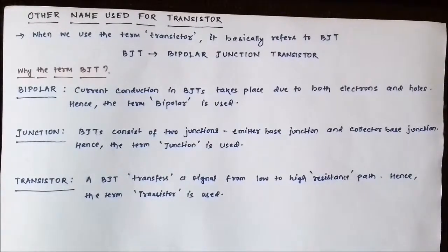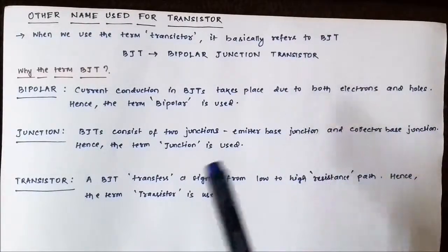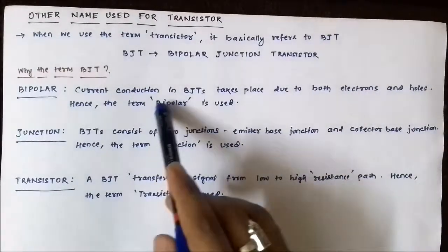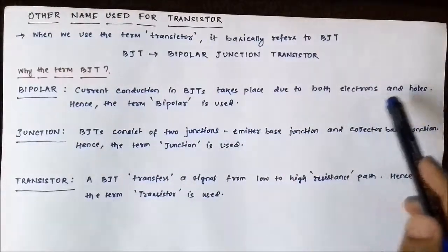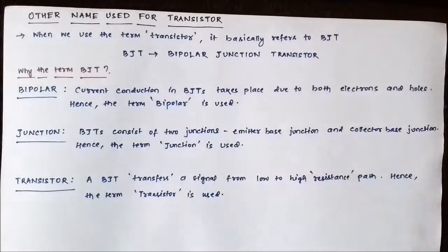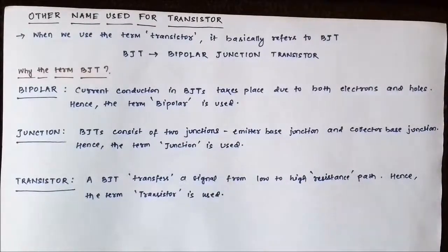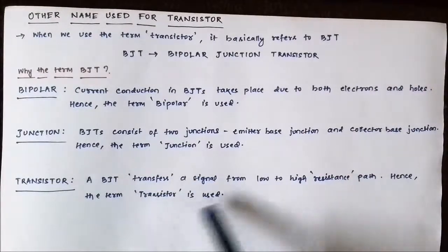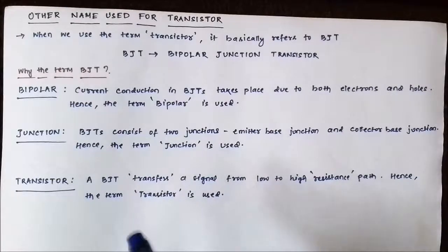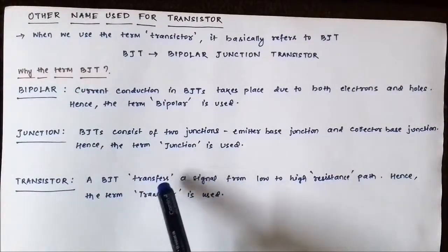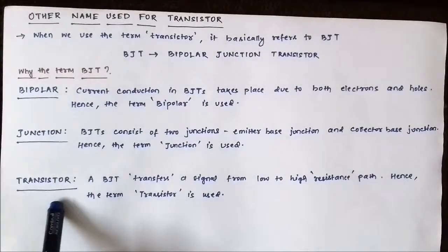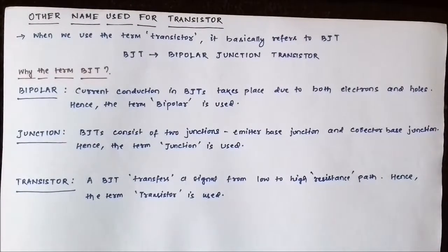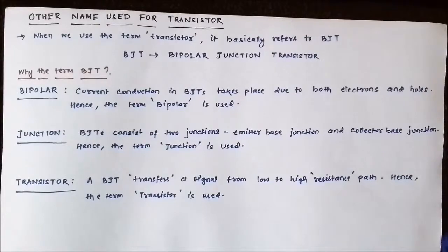Since current conduction takes place due to both electrons and holes — both polarities of charges — the term 'bipolar' is used. The BJT also has two junctions, the emitter-base and collector-base junctions, hence the term 'junction' is used. And as discussed, the BJT transfers a weak signal from a low-resistance to a high-resistance path, giving the term 'transistor'. Combining all three gives us 'bipolar junction transistor'.